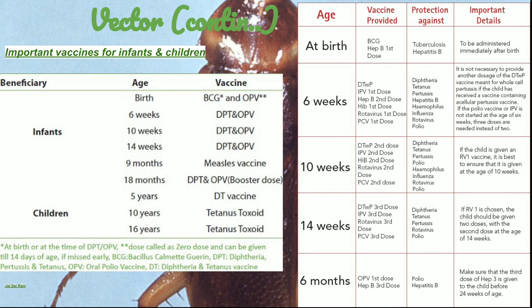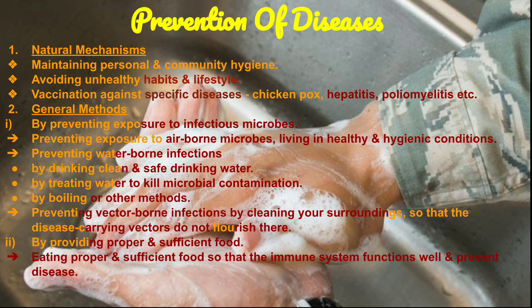Now, what are the preventive measures for diseases? There are natural mechanisms and general methods. The natural mechanisms include: first, maintaining personal and community hygiene; second, avoiding unhealthy habits and lifestyle; and third, vaccination against specific diseases. Vaccines are given from birth to protect children from diseases like chickenpox, hepatitis, and poliomyelitis.